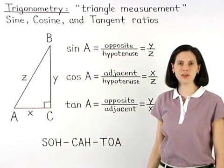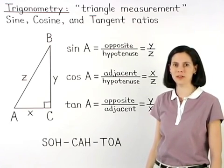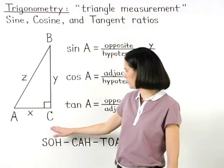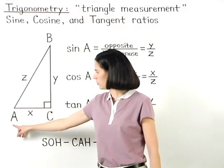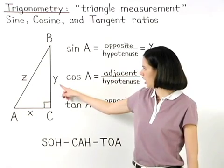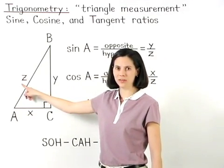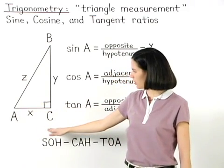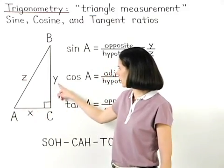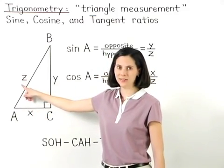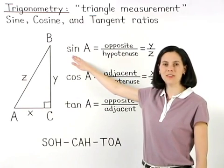The sine, cosine, and tangent ratios can be defined as follows. In right triangle ABC, the sine of angle A is equal to the ratio of the length of the side opposite angle A to the length of the hypotenuse. So, in right triangle ABC, the sine of angle A equals Y over Z. Notice that the abbreviation we use for sine is SIN.